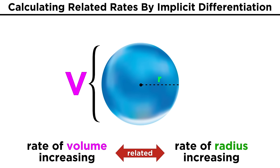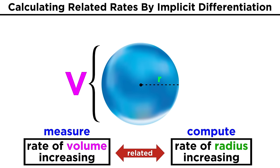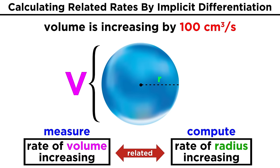But one of these is probably much easier to physically measure than the other, so rather than trying to measure both, let's measure the one that we can, and compute the rate of change in the other using calculus. It's probably easier to measure the change in volume, so let's say that we do measure the volume over some period of time, and we find that it is increasing by one hundred cubic centimeters per second.